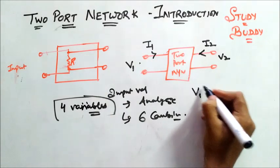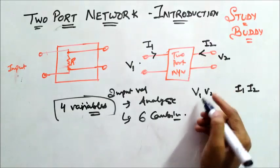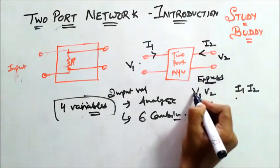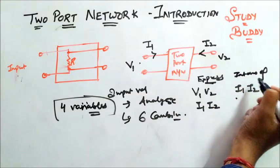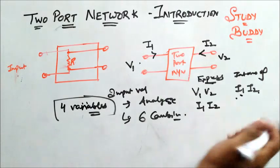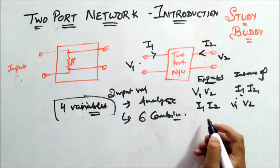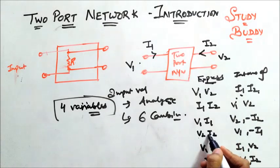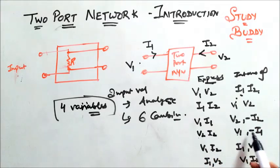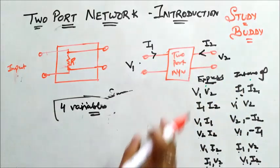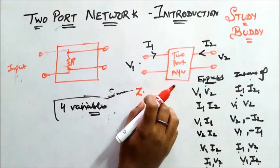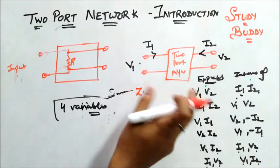I'll tell you how. For example, I can express V1 and V2 in terms of I1 and I2. Or I can express I1 and I2 in terms of V1 and V2. Then there are the remaining mixed combinations — such as V2 and I2 expressed in terms of V1 and I2, and so on. This first combination will give me a matrix of Z, that is, Z parameters, which are helpful for analyzing any two port network.